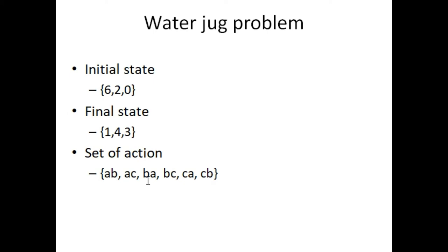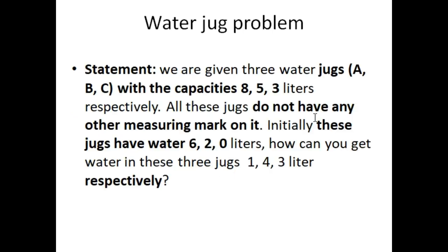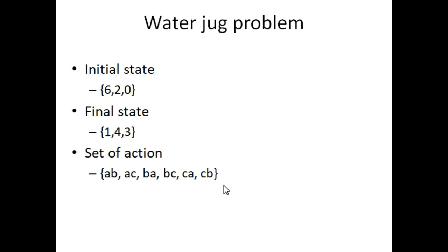If we are going to move water from jug B to A, then this action will be BA. At the end, CB means if we are going to move our water from jug C to jug B, then we will represent this state as CB. Here is some crucial information I have written in this slide.